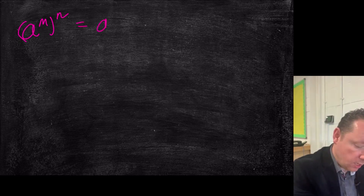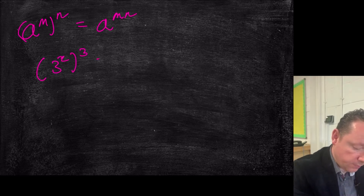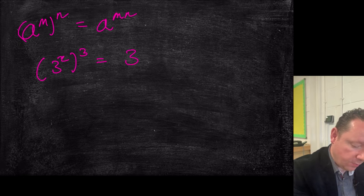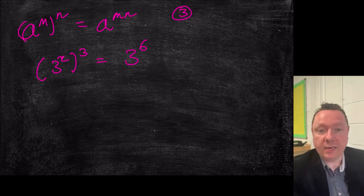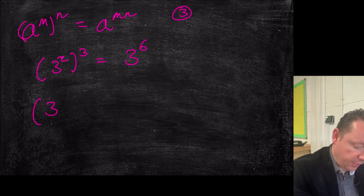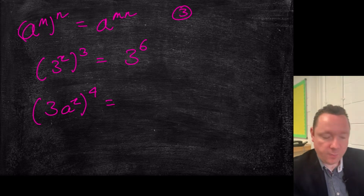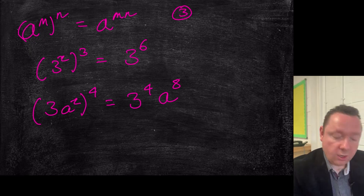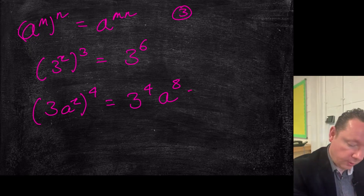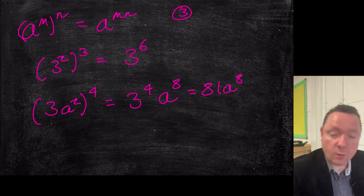We've got the power of power rule. So if I had a to the power of m and then all to the power of n, I could just times the powers. For example, if I had three squared and then cubed, that'd be two times three equals six — three to the power of six. Another example you need to be very careful with: sometimes you'll combine a number with a letter, such as three a squared to the power of four. That means you split it into three to the power of four times a to the power of two times four, which is a to the eight. So you'd get 81a to the eight.